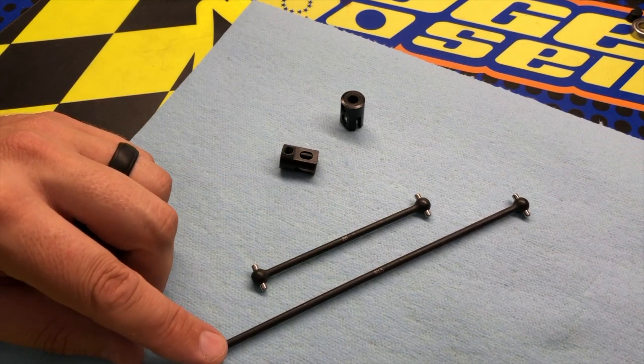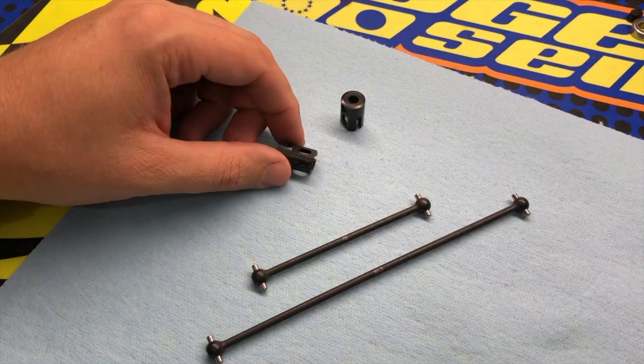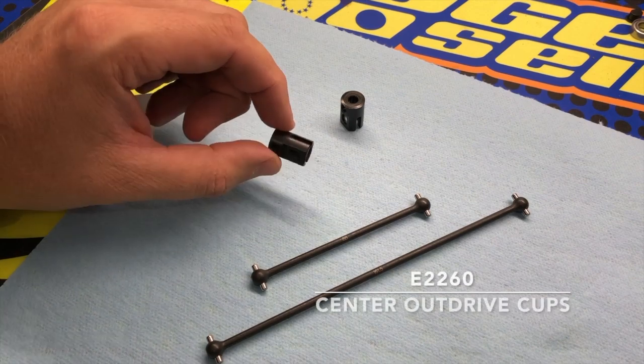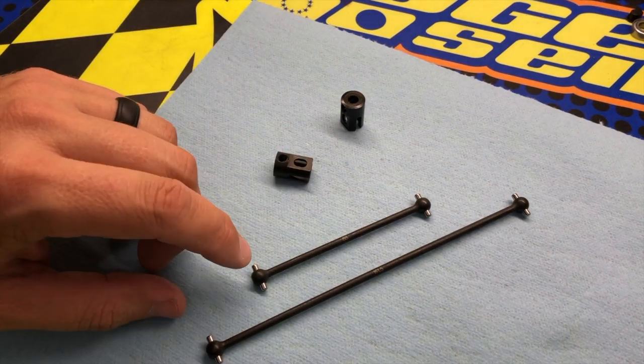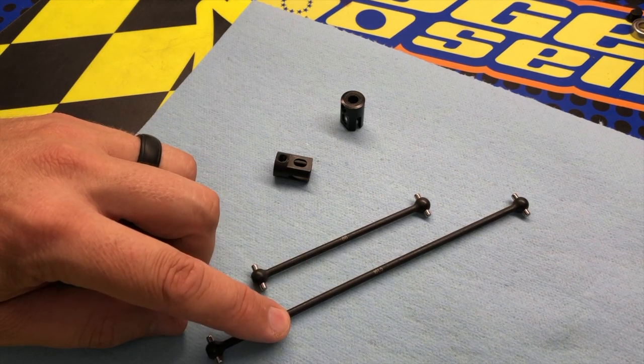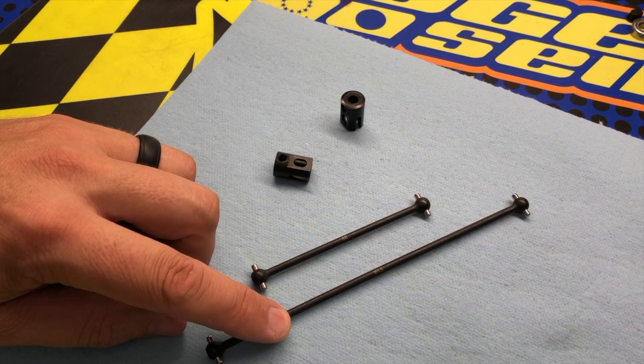When installing these into your MBX-18s, you'll also need to get two of the E-2260 center out drive cups. The bone length for the front is 88 millimeters and the rear is 161.5 millimeters.